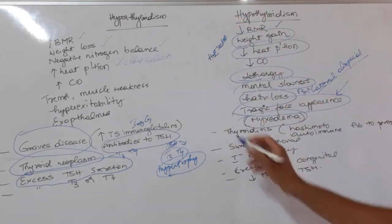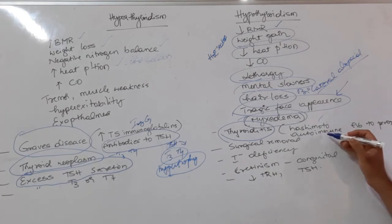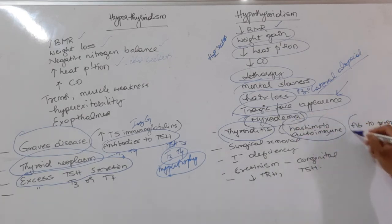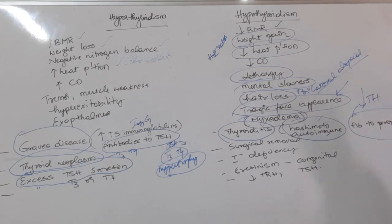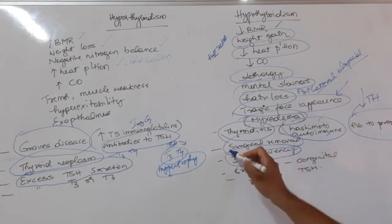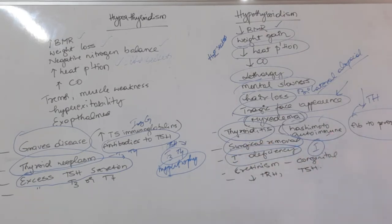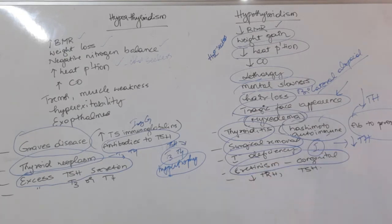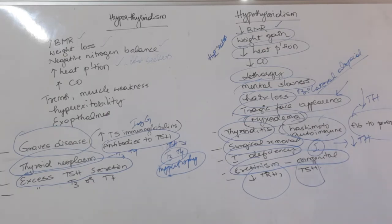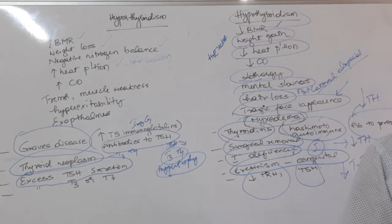Causes of hypothyroidism include thyroiditis — such as Hashimoto's or autoimmune thyroiditis — where antibodies are produced against peroxidase, blocking oxidation and organification, decreasing thyroid hormone production. Surgical removal of the gland, iodine deficiency (as iodine is the most important raw material), cretinism (a congenital problem), and decreased TRH or TSH production from the hypothalamus or anterior pituitary all cause decreased production of T3 and T4.